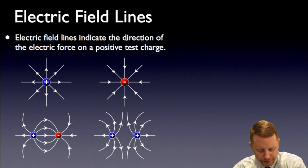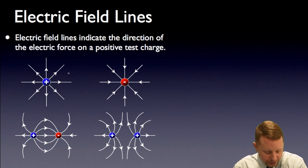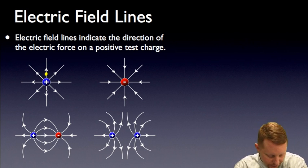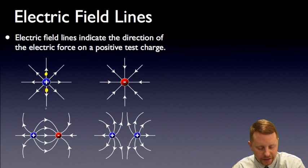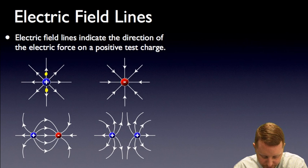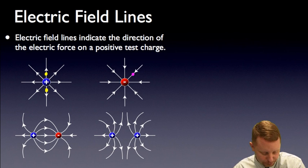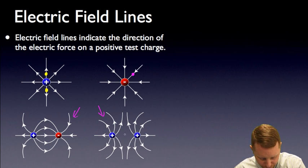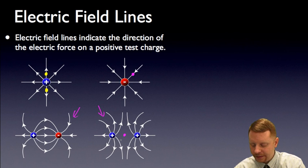Electric field lines indicate the direction of the electric force on a positive test charge. If we have a positive charge here, anywhere I place another positive charge it's going to feel a force away from it. They always go away from positive charges and toward negative charges. Over here on the right, we have a negative charge — if we put a positive charge in that field, it would want to go toward the negative, so the arrows point in. Below, you can see electric field configurations for two-charge systems: a positive and a negative, where field lines go from positive to negative; and a positive and a positive, where field lines go away from both. Right in between two identical charges, you get a region where the net electric field is zero.